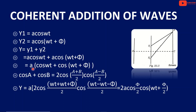So a cos(ωt) plus a cos(ωt + φ). Using the identity cos A + cos B = 2 cos((A+B)/2) cos((A-B)/2), we get y = a into 2 cos((ωt + ωt + φ)/2) times cos((ωt − ωt − φ)/2).